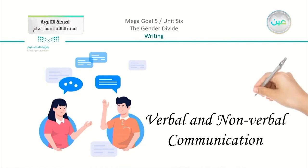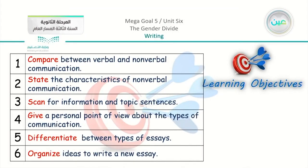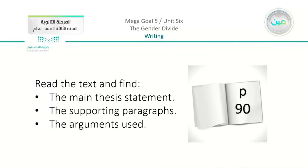Now moving on, we are going to write about verbal and nonverbal communication — we have our writing class for the day. Our objectives are: to compare verbal and nonverbal communication, state the characteristics of nonverbal communication, scan for information and topic sentences, give a personal point of view about types of communication, differentiate between types of essays, and organize ideas to write a new essay. Please open your books to page 90. The instructions are to read the text and find the main thesis statement, the supporting paragraphs, and the arguments used.